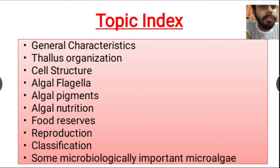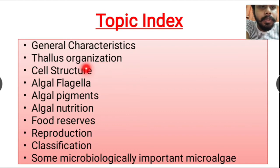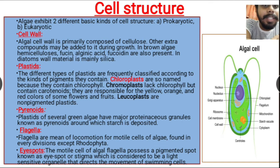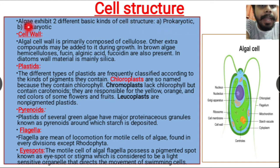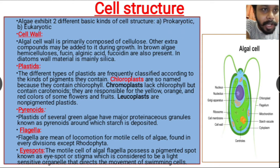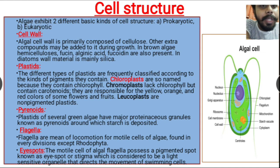Now here we can see the topic index of algae. In our previous video we discussed general characteristics and thallus organization. In this video we will discuss the cell structure of algae. Algae exhibit two different basic kinds of cell structure: prokaryotic and eukaryotic. The only prokaryotic type is cyanobacteria or blue-green algae, so in this video we are discussing only the eukaryotic algae.